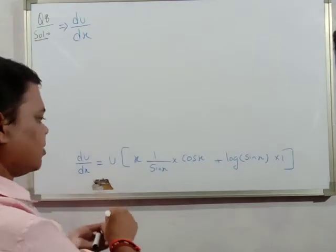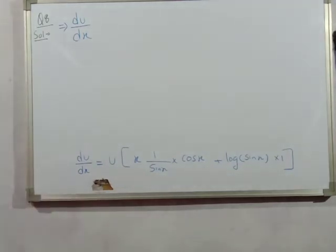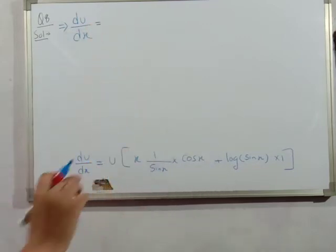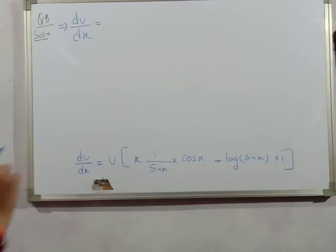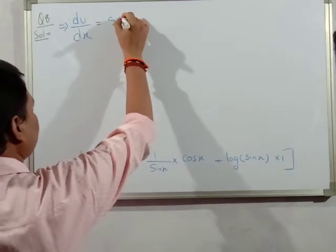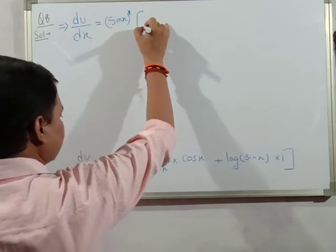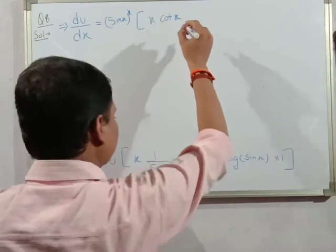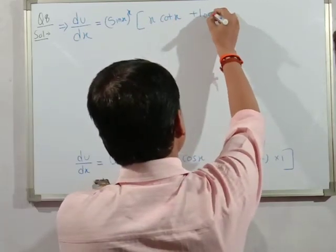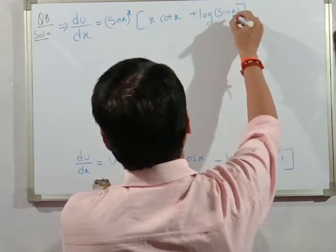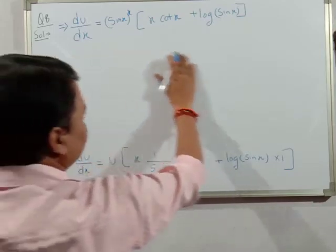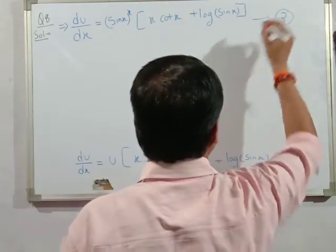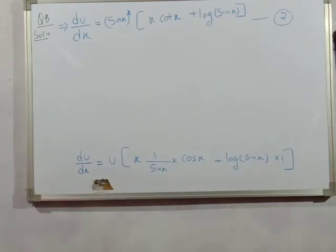Therefore the derivative of u with respect to x equals u times (x·cot x plus log(sin x)), and since u equals sin(x) to the power x, we get: du/dx equals sin(x)^x times (x·cot x plus log(sin x)). This is equation number 2.